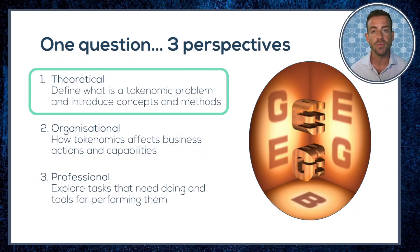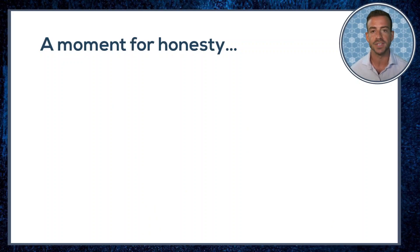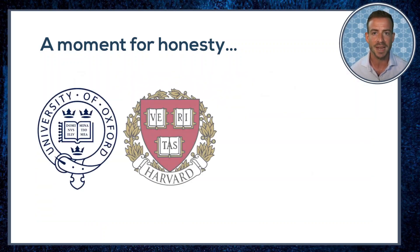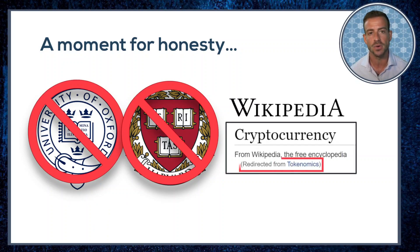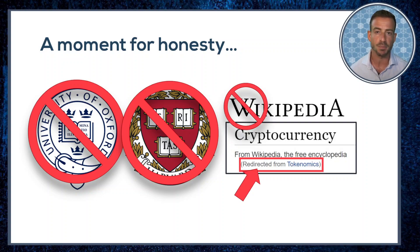Before we start, I want to be frank and transparent about the nature of the content ahead. Blockchain is a young and rapidly evolving sector, and that means the theory and best practices that professionals are using to make sense of and solve problems is rapidly evolving with it. Tokenomics does not yet have a settled definition — I can't point you to a respected textbook by Oxford or Harvard University Press, and even Wikipedia does not yet have a dedicated tokenomics entry at the time of this recording. But we can't wait for these institutions to catch up; to be able to take practical action today, we need working definitions today.